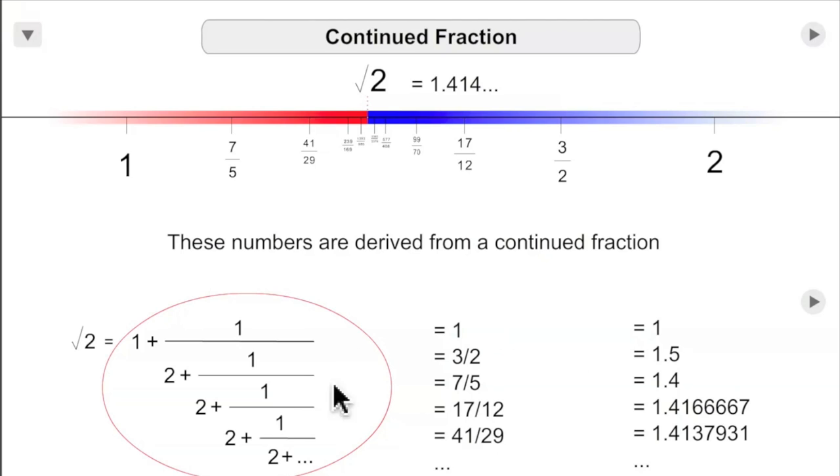Again, the way it works is it provides a sequence of rational approximations, each of which can be represented as a rectangle. When divided, it will provide you with a closer and closer approximation to the square root of 2. And the Dedekind Cut just indicates that's a rational number.